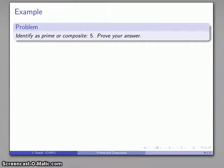Where we actually run into difficulties is when we try to prove that a number is prime. For example, let's consider the number 5. If we want to identify it as prime or composite, we want to prove our answer. Remember that in order for a number to be identified as prime, we need to show that it cannot be written as the product of smaller integers. That's kind of a problem because how do we know it can't be written as a product of smaller integers?